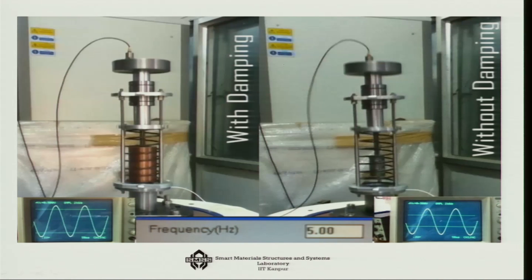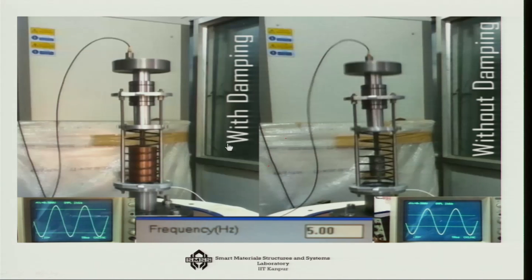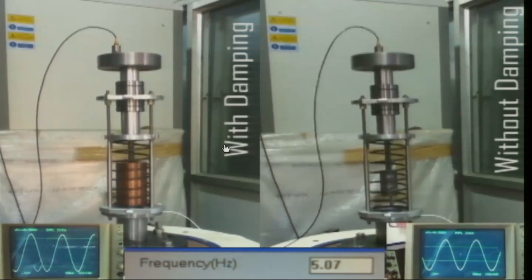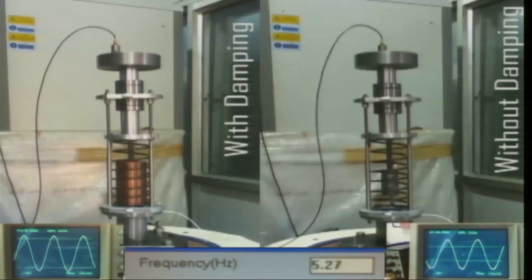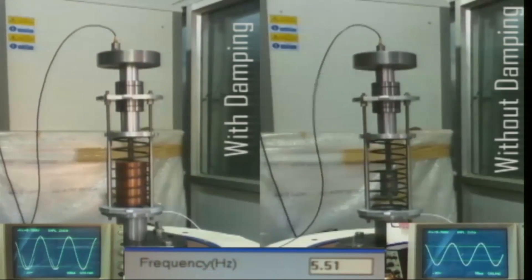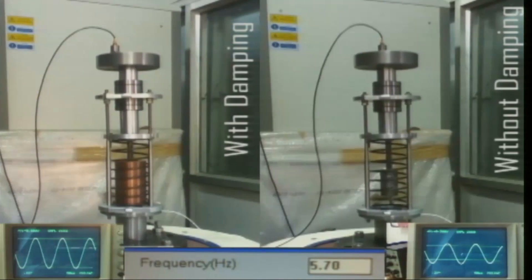Looking at the oscillations on the right-hand side, you can see how vigorous the oscillation of the top plate is — visible also on the oscilloscope. On the left-hand side, most of the vibrating energy is being transferred to electrical energy, and hence you get much less vibration amplitude.